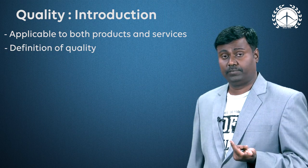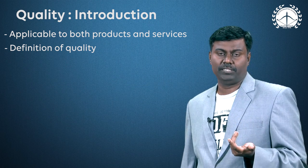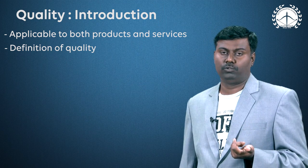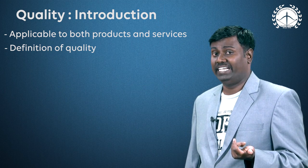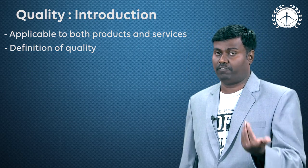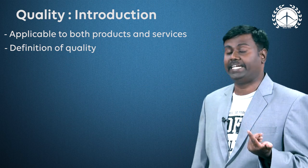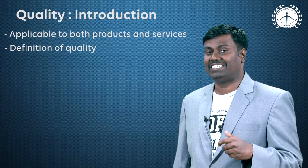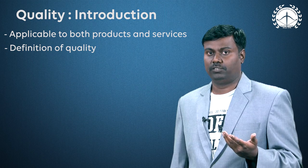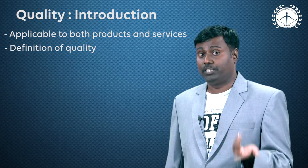When it comes to the definition of quality, there are some gurus — mainly developed by western concepts. Juran said quality is fitness for intended use. As per ISO, which is a focus of the IES paper, quality is the totality of characteristics that bear an ability to satisfy stated as well as intended needs. Sometimes needs are not stated, but to satisfy the customer you need to know them.